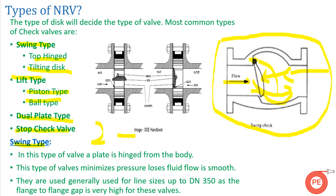Swing type valves are used in pump discharges or compressor discharges. However, the limitation of a swing check valve is the flange-to-flange gap — as the pipe size increases, this gap becomes very large. For sizes greater than 350mm with space constraints, we generally go for a counterweight dashpot type valve instead. The key benefit of the swing check valve is that it minimizes pressure losses and fluid flow is smooth.